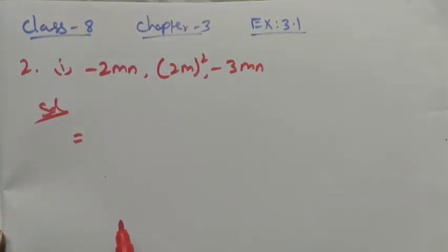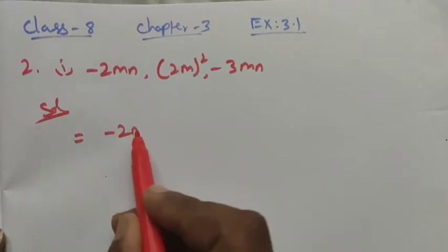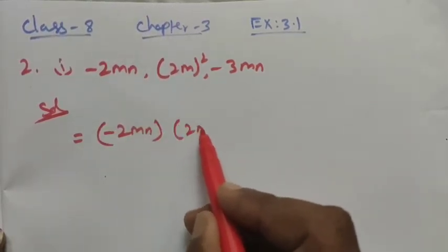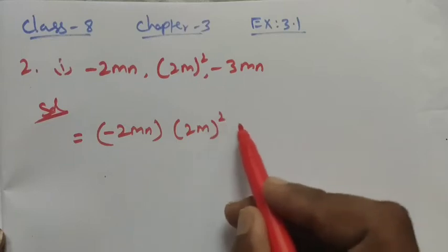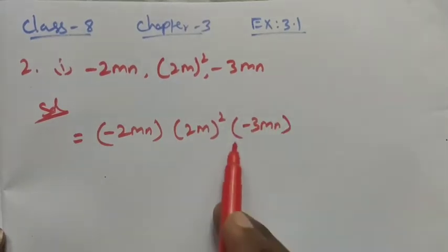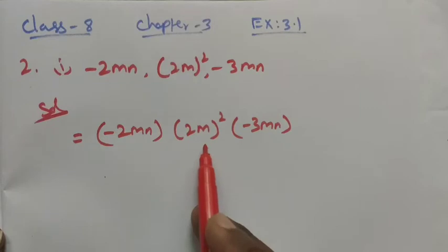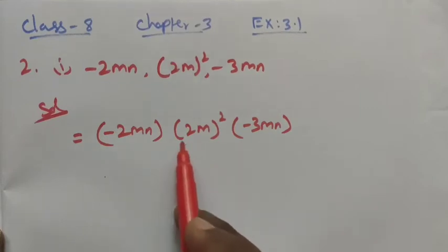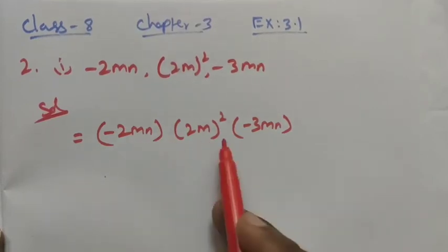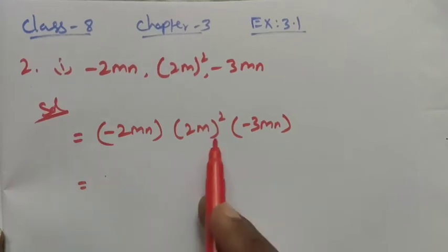Product means multiplication, so we write: minus 2mn into (2m)² into minus 3mn. The bracket here is a product bracket — we can use the multiplication symbol or a diagonal separator.